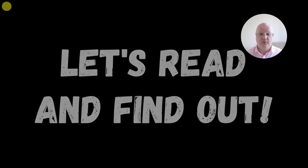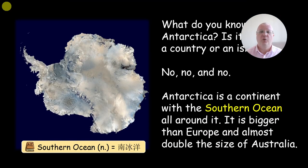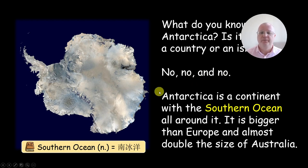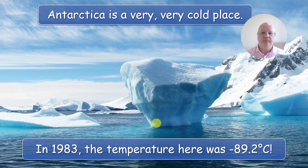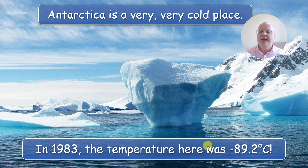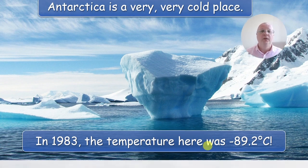Let's read and find out. What do you know about Antarctica? Is it a city, a country, or an island? No, no, no, and no. Antarctica is a continent with a southern ocean all around it. It is bigger than Europe and almost double the size of Australia. Antarctica is a very, very cold place. In 1983, the temperature here was 89.2 degrees centigrade below zero.